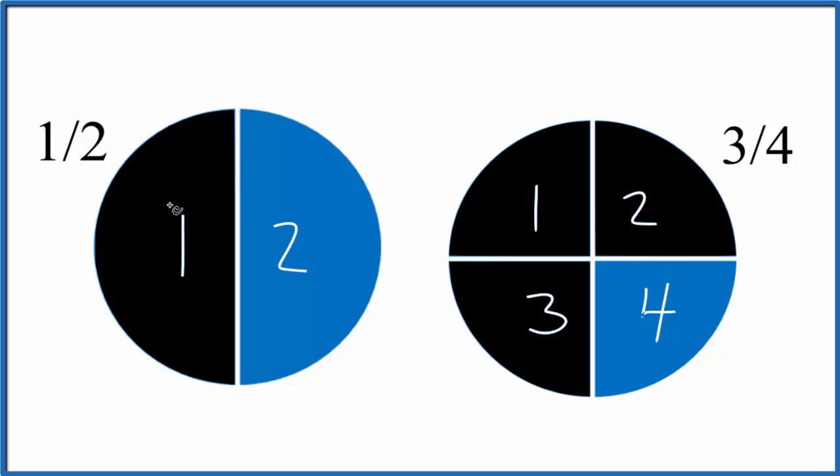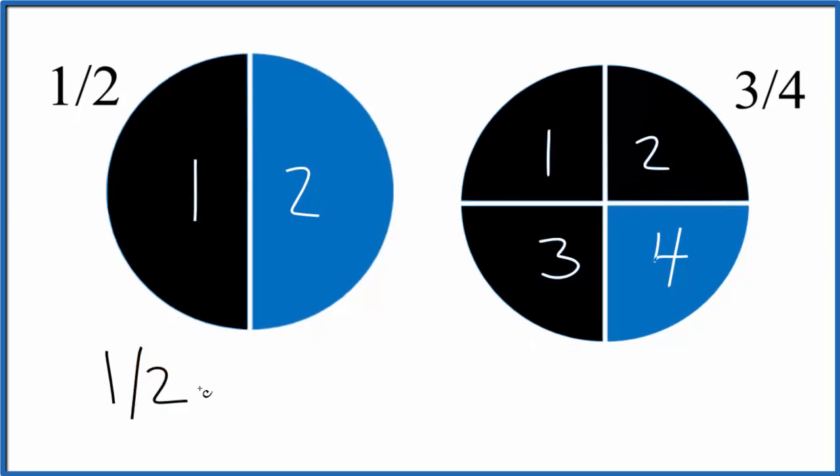But we can check by dividing and getting decimals. So we could divide one by two. One divided by two, that's 0.5.